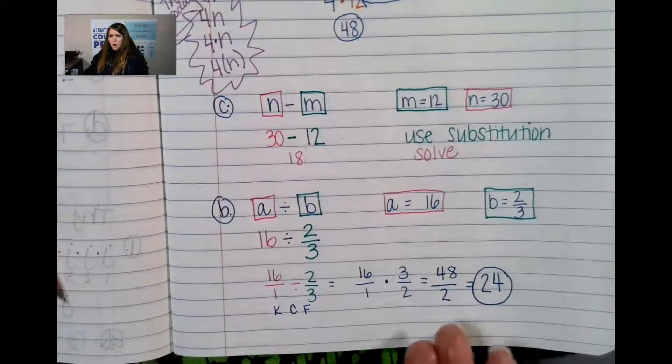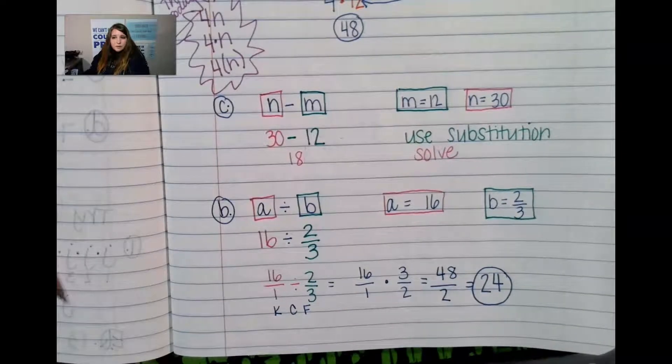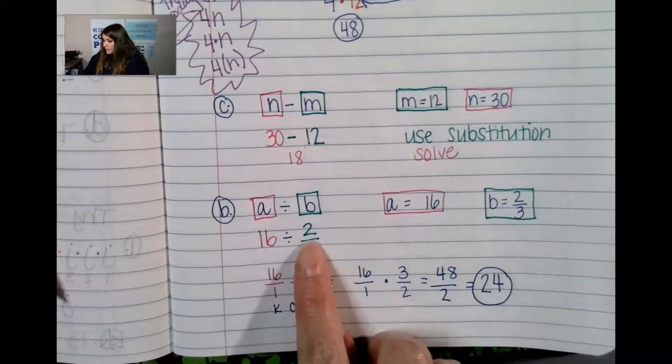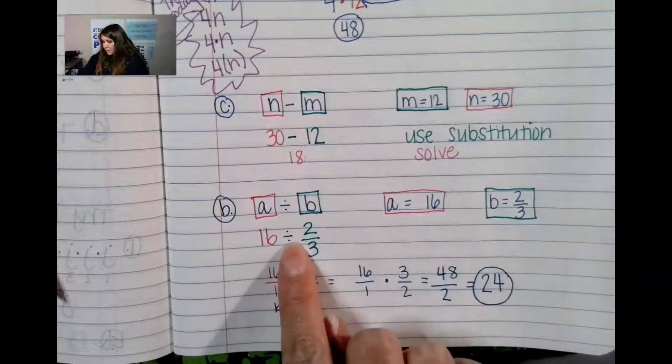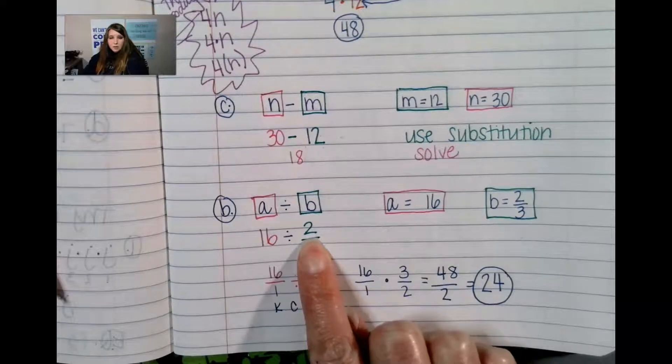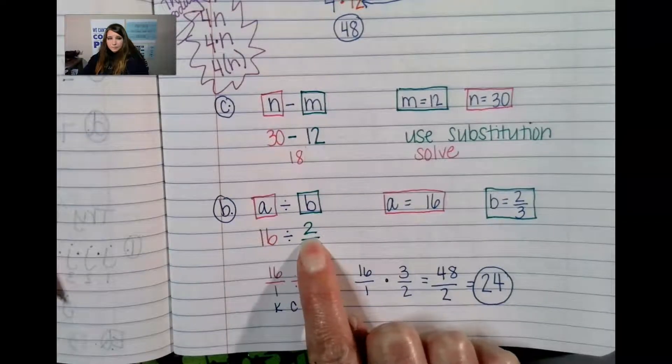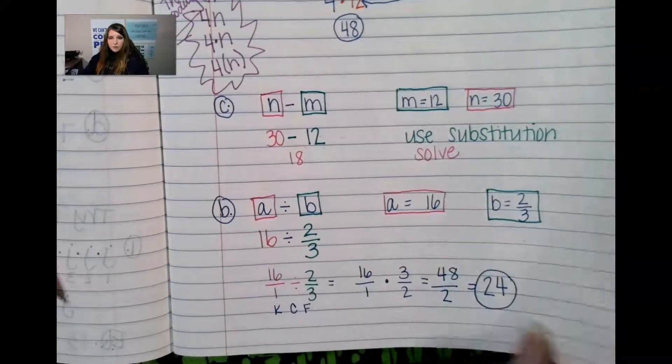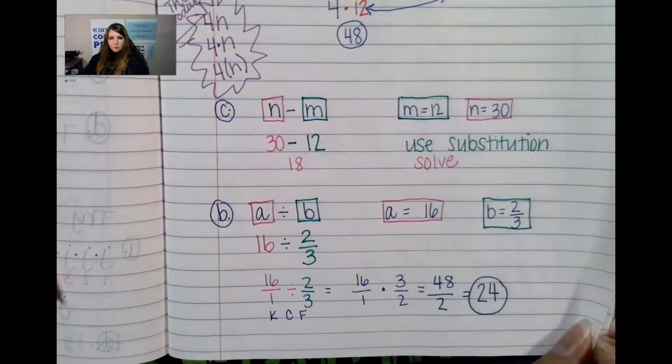Not all of these problems will be this involved. Like that's a crazy problem, right? Because it was a fraction. If this problem had just been b equals 2, then 16 divided by 2 would just be 8. You would still just put your number in for the variable and just solve. So go ahead and hit pause right now because I'm going to turn the page and do another problem with you.